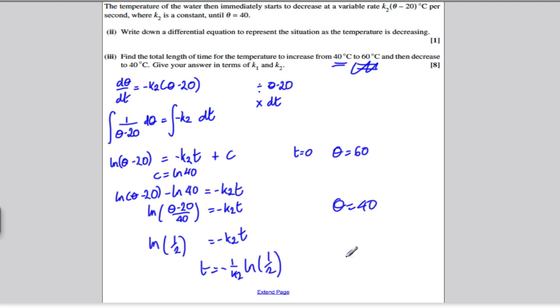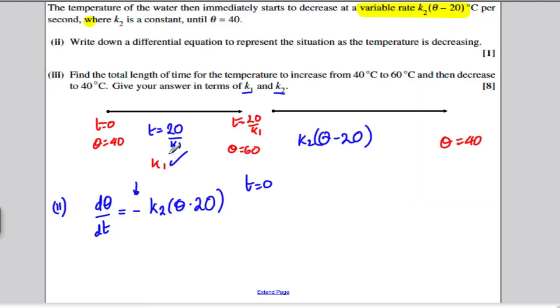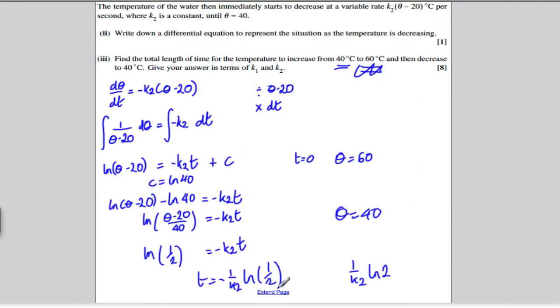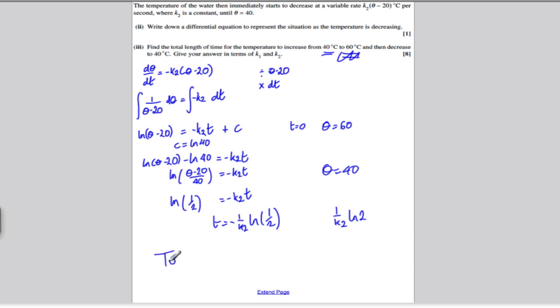So what's the total time? Well, this time here was 20 over K1, and this time here we've worked out as 1 over K2, ln 2. So total time is equal to 20 over K1 plus 1 over K2, ln 2.